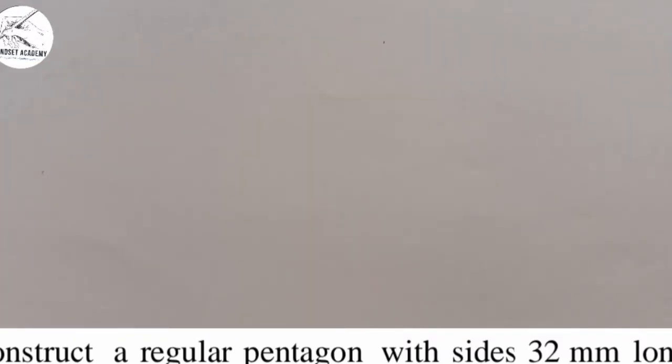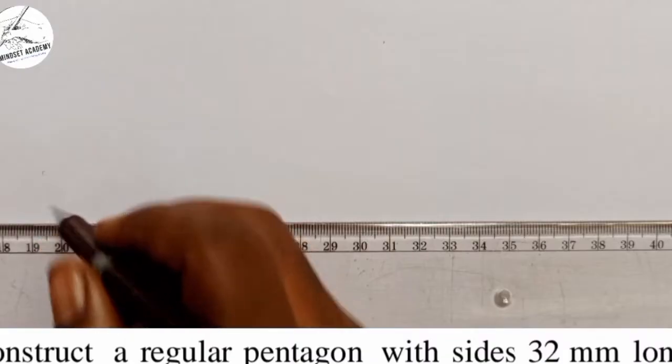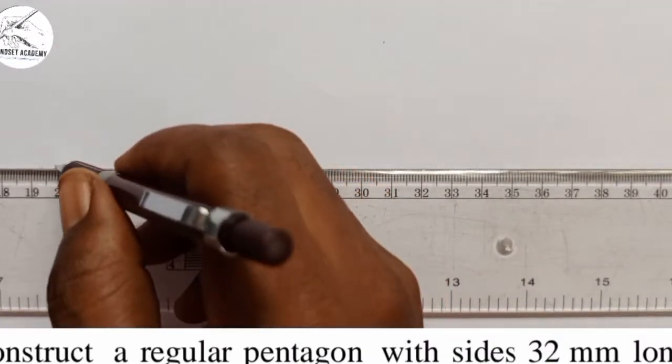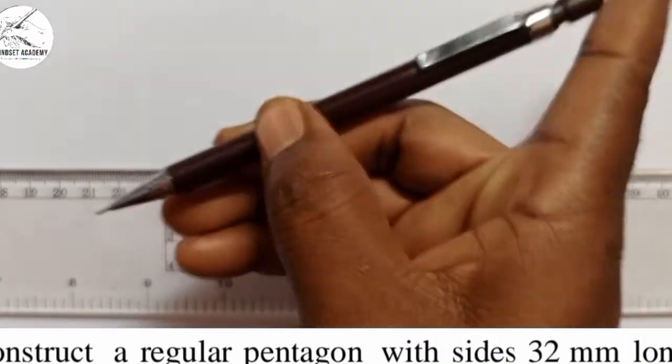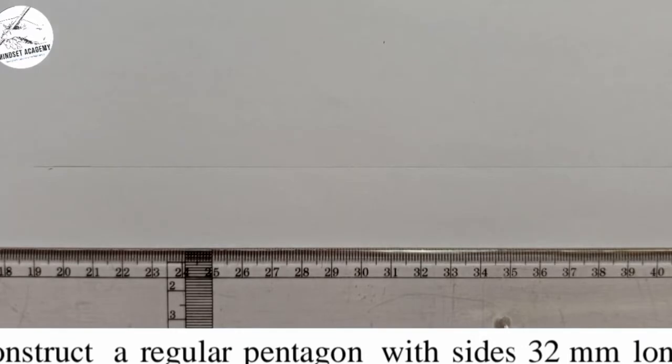So what you first of all do is to draw a straight line this way. You draw a line this way. First of all, a straight line this way.